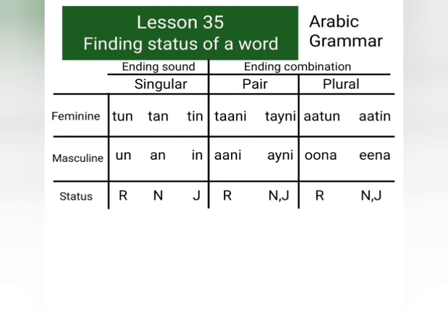There are three types of ending sounds for masculine singular words: un, an, and in. There are two types of ending combinations for masculine pair words: ani and aini. There are two types of ending combinations for masculine plural words: una and ina.